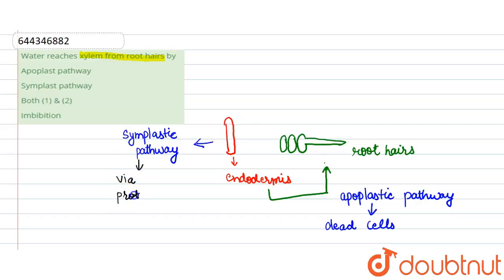Via the protoplast part of the plant. So our option C is correct, which is both 1 and 2. Water transport to xylem involves both apoplastic and symplastic pathways. So our option C is correct. Thank you.